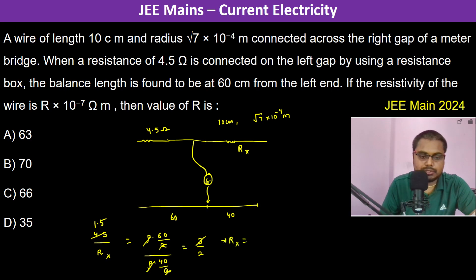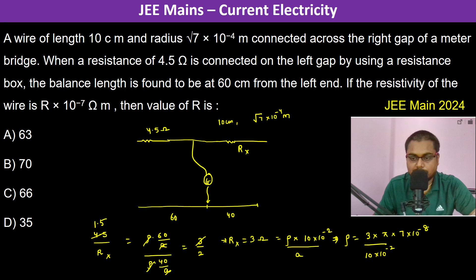Now what is R_x? It's ρl/a. So therefore ρ into length was 10 centimeters, so 10 × 10^-2, into area a is π × r^2, so that is 7 × 10^-8.